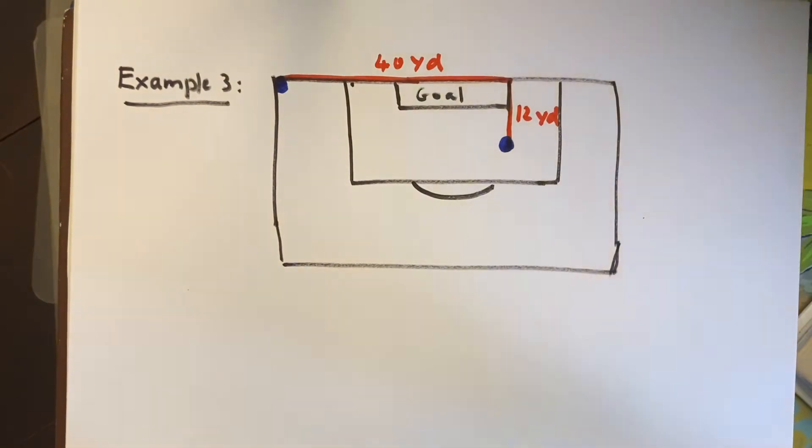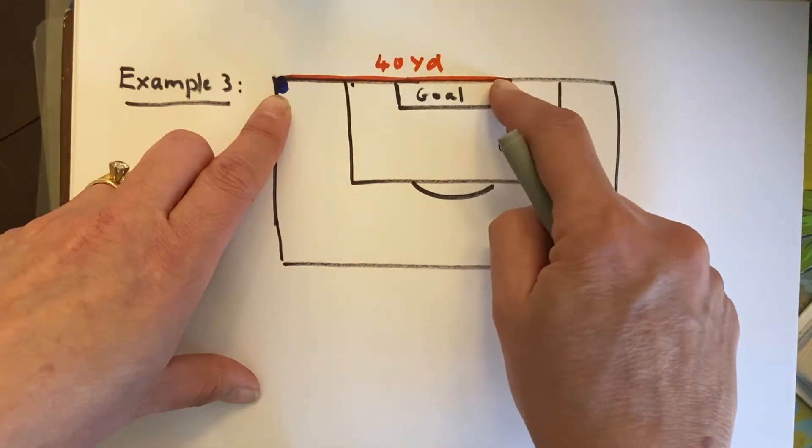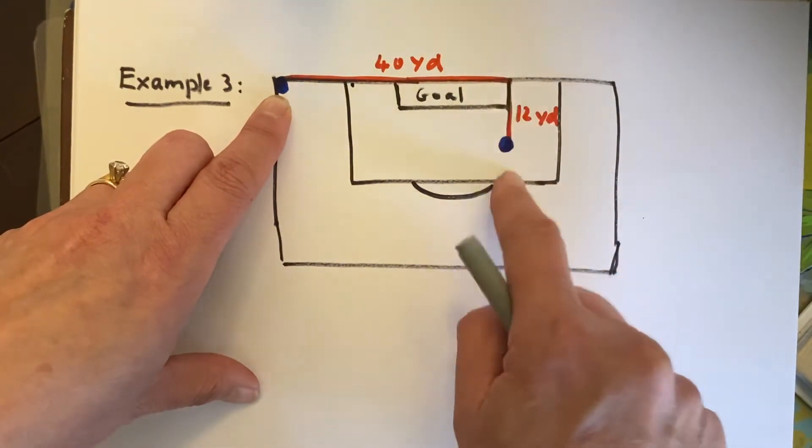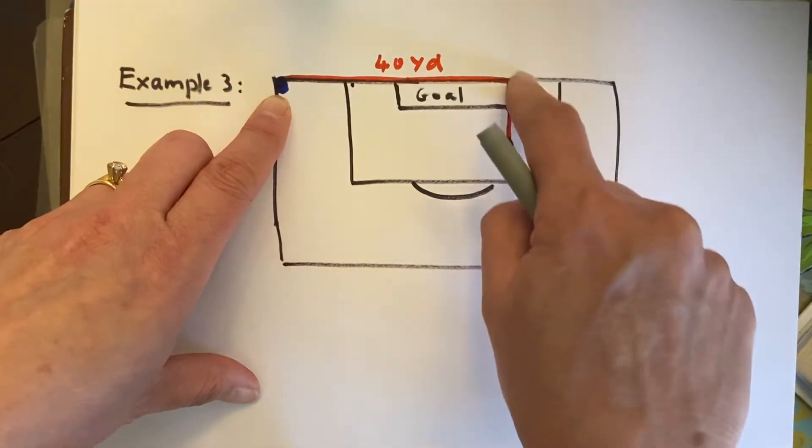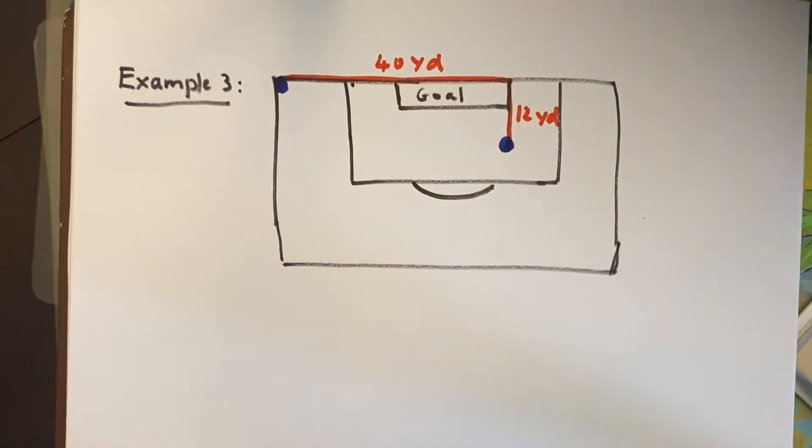And we can see that it's 40 yards from here to the end of that goal box, but the player is positioned right here on the edge, 12 yards away from the very edge of the goal. How far does the corner kick have to go to reach this player?